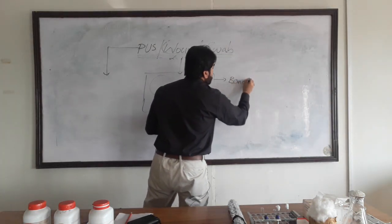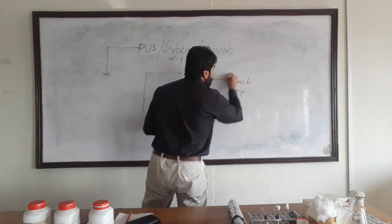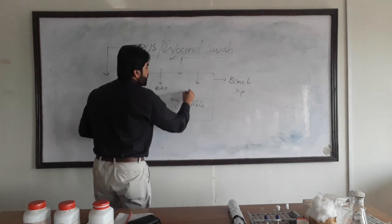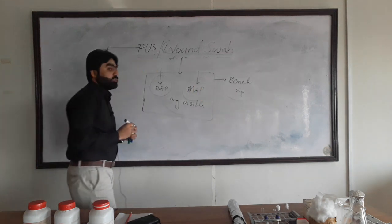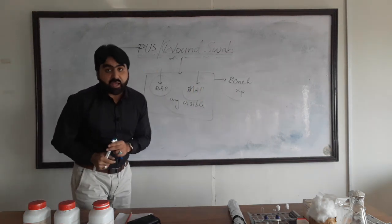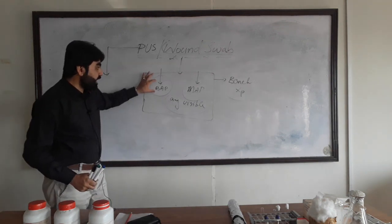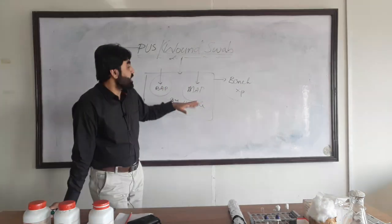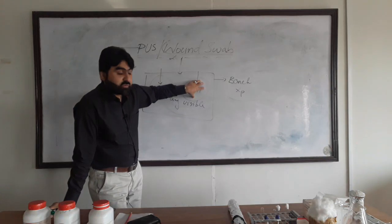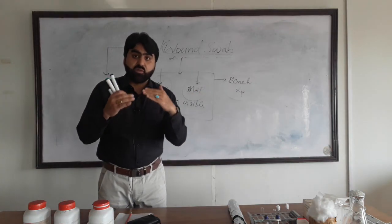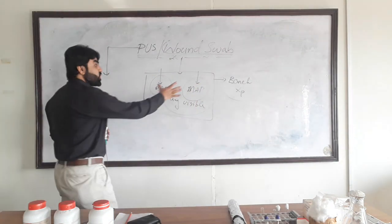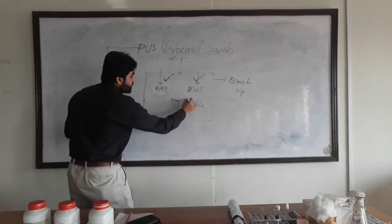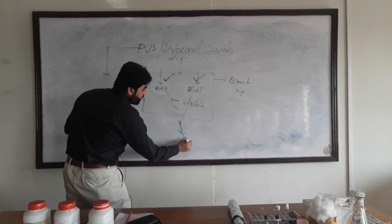Assuming we have visible growth of a single type of colony — a pure culture — we use bench experience for identification. For example, if there is growth on both blood agar and MacConkey agar, it means the organism is gram-negative bacteria, because MacConkey agar supports gram-negative growth. If growth appears on both media, the possible pathogen is gram-negative bacteria.